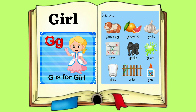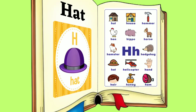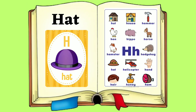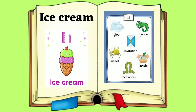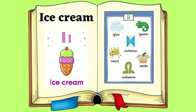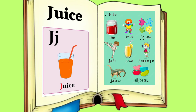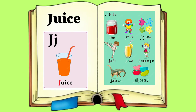Fish. G for Girl. G, G. Girl. H for Hat. H, H. Hat. I for Ice Cream. I, I.